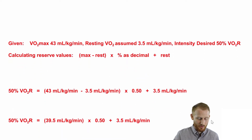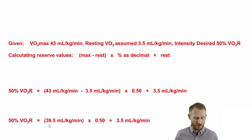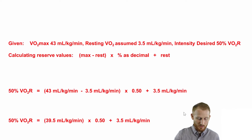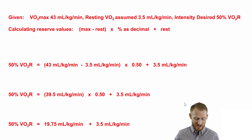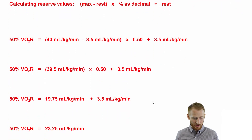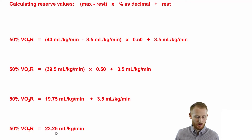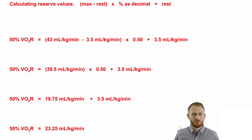Let's do this one step at a time. If we subtract 3.5 from 43, we end up with 39.5 milliliters of oxygen per kilogram body mass per minute. Then when we multiply that by 0.5, we end up with 19.75 mL/kg/min. The last step is to add in the 3.5, and you end up with a VO2 at 50% of VO2 reserve equal to 23.25 milliliters of oxygen per kilogram body mass per minute for Toby. So if you want him to exercise at 50% of VO2 reserve, he needs to be exercising at 23.25 mL/kg/min.